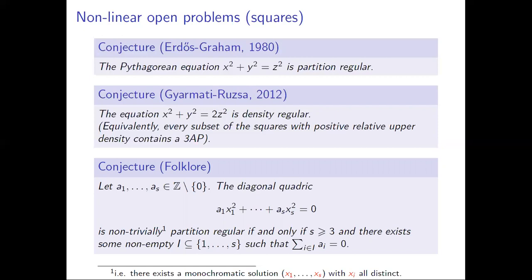By non-trivially partition regular I mean that we're interested in monochromatic solutions in which the x_i are all distinct. This is the reason we impose s to be at least three — when s equals two, the only partition regular equation is some multiple of x₁² = x₂², which only has trivial solutions. I should note that the only-if part of this conjecture is known; it follows from Rado's theorem. What's difficult is sufficiency — determining when an equation is partition regular.